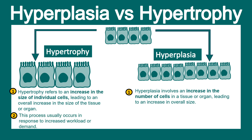Hypertrophy occurs in response to increased workload or work demand, whereas hyperplasia requires some kind of stimulus — often hormonal or a growth factor-like stimulus.